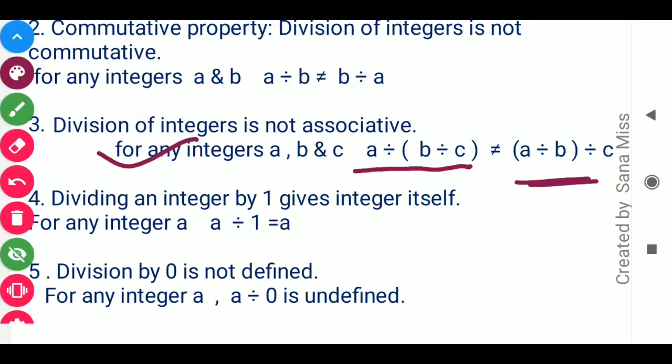One important property: dividing any integer by 1 always gives the integer itself. For any integer a, a divided by 1 equals a. For example, 4 divided by 1 is 4, and minus 2 divided by 1 is minus 2. Finally, division by 0 is not defined — for any integer a, dividing it by 0 gives an undefined result.